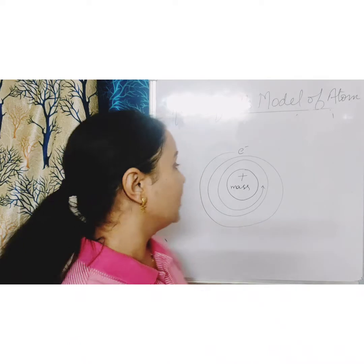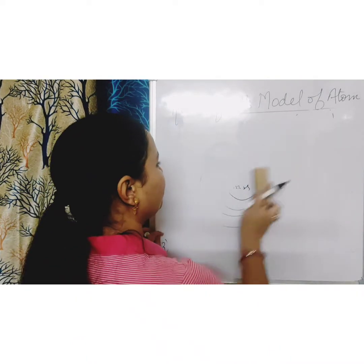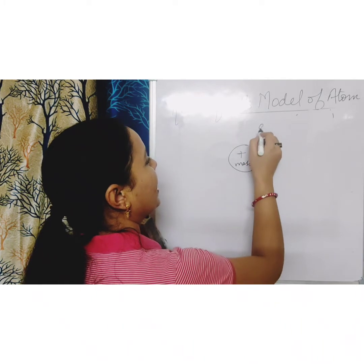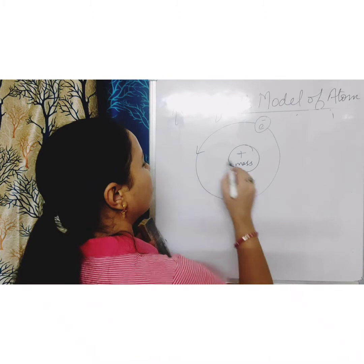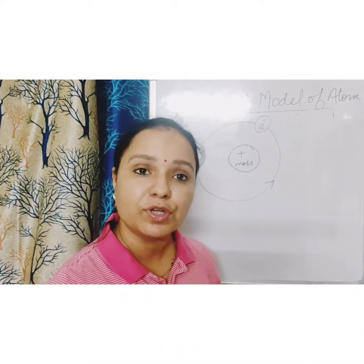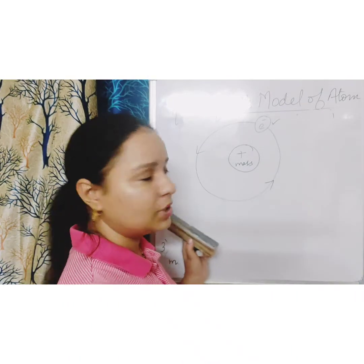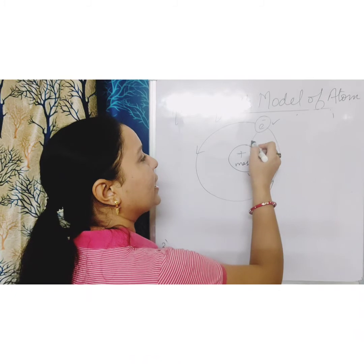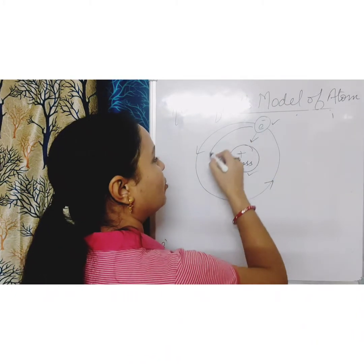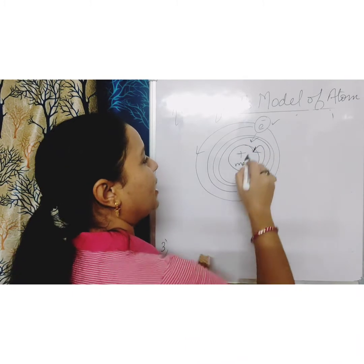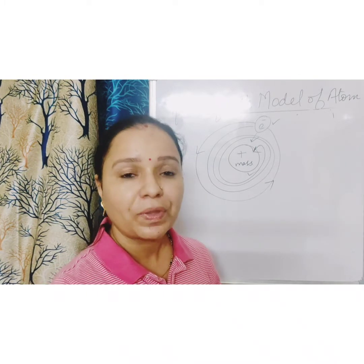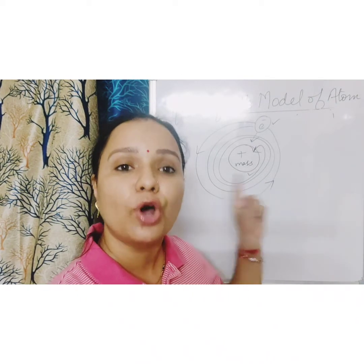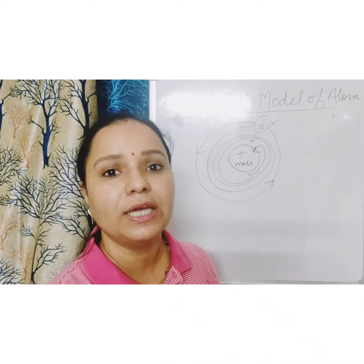But when he was asked — since electrons are negatively charged and the nucleus is positively charged with lots of charge — the electron should get attracted towards the nucleus, and while taking rounds around the nucleus it should ultimately come and fall inside the nucleus. When he was asked this question, he was unable to answer. He couldn't justify why the electron does not fall into the nucleus while it is revolving around it.